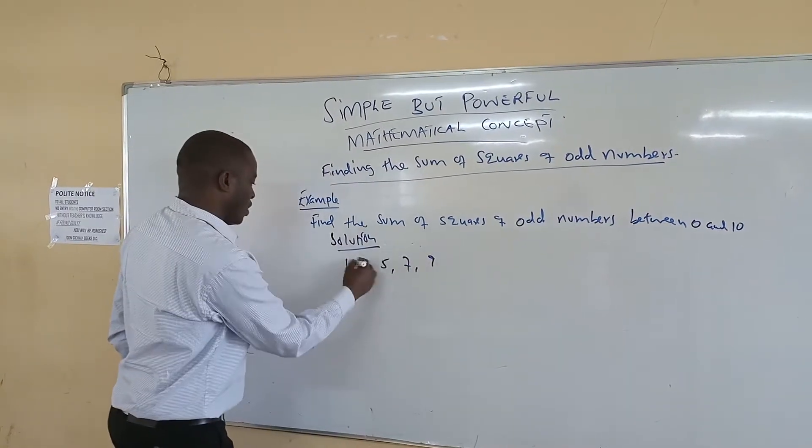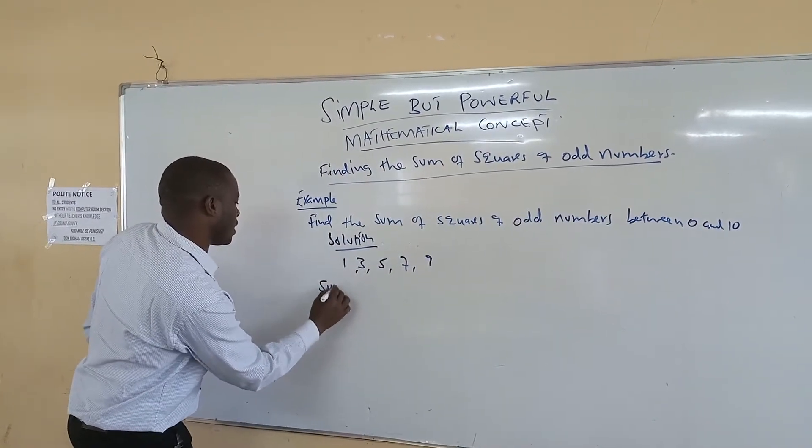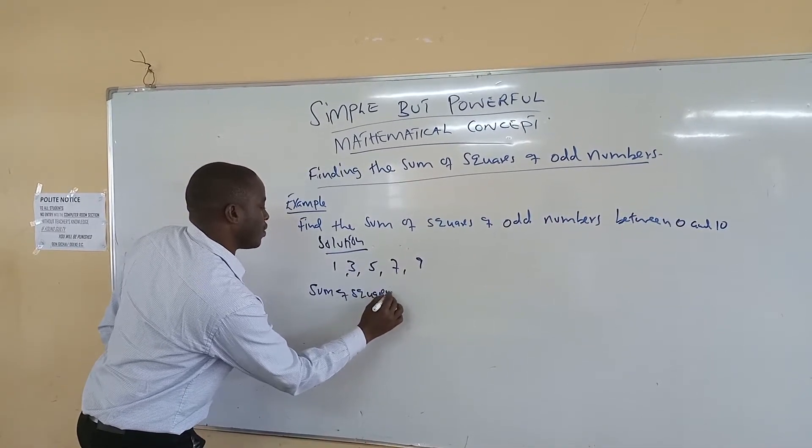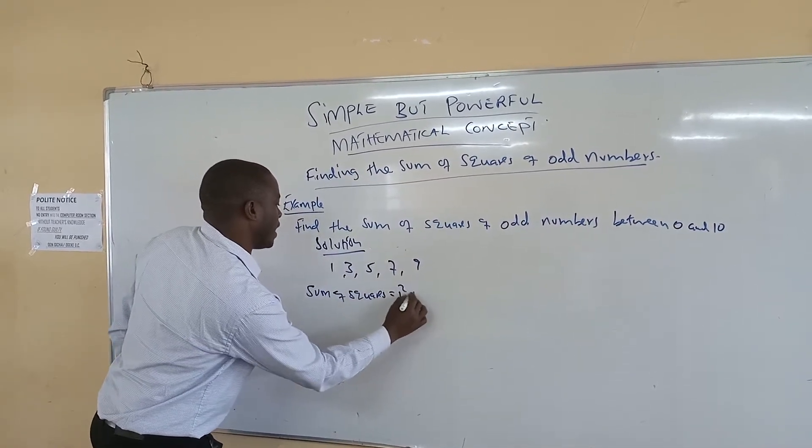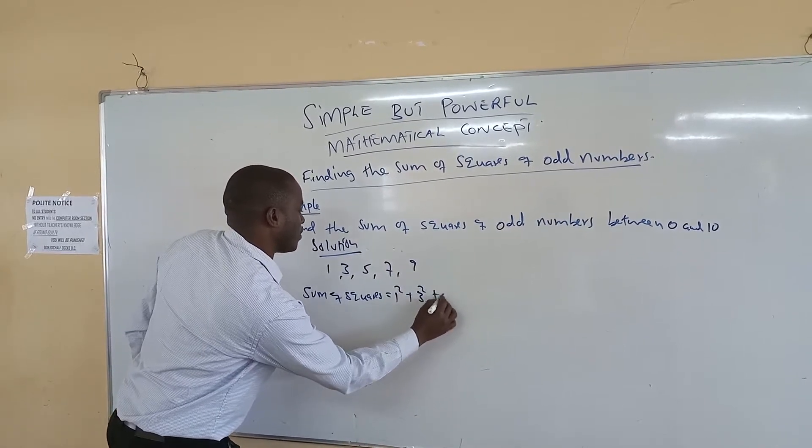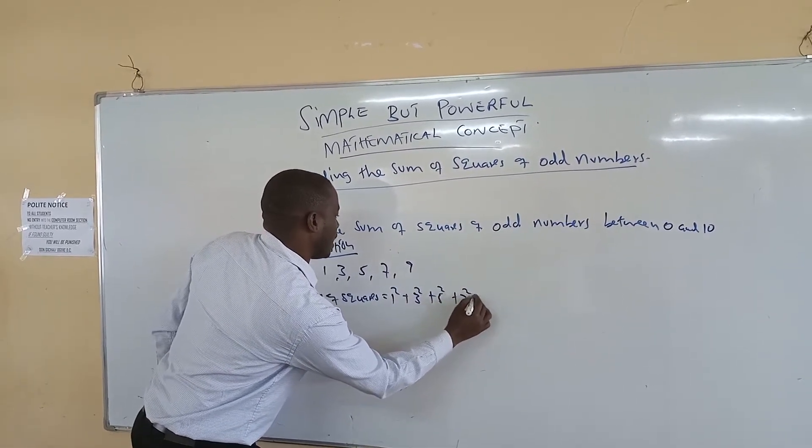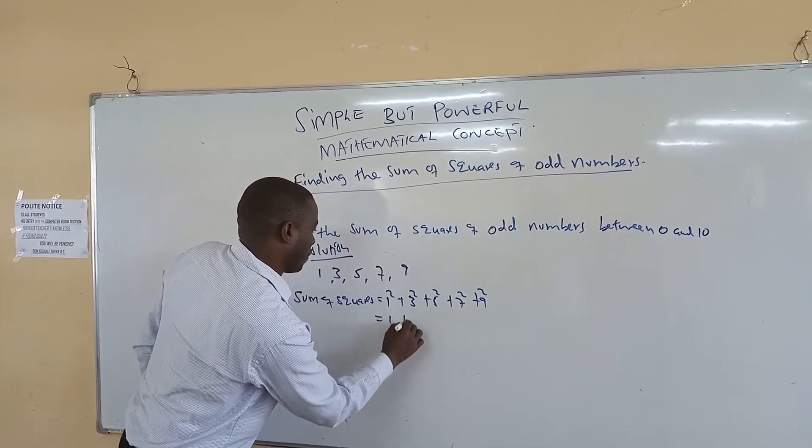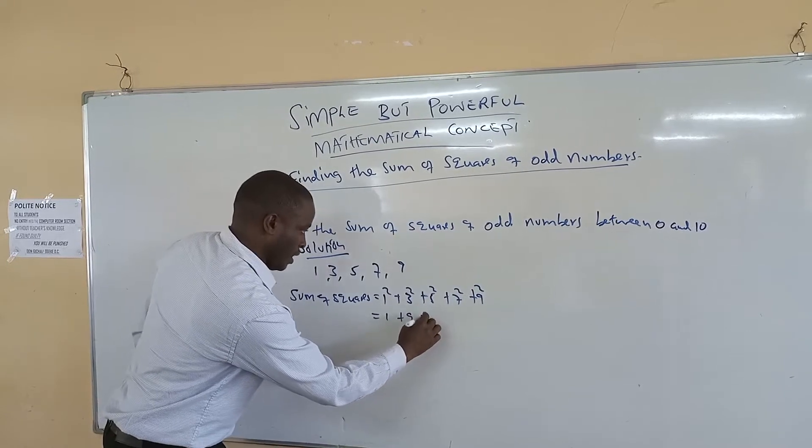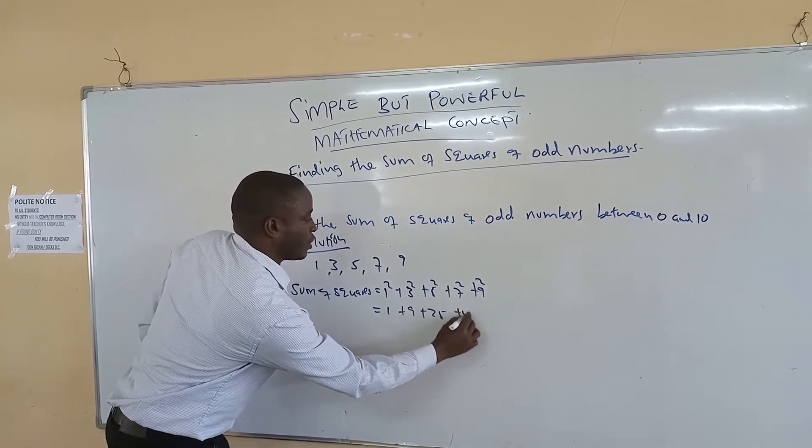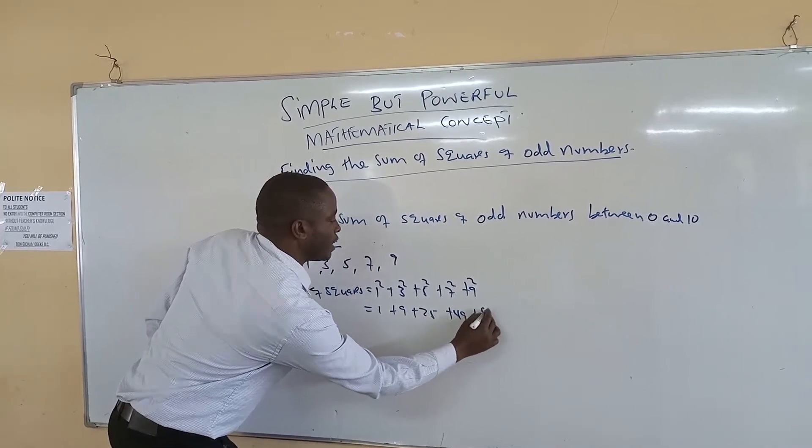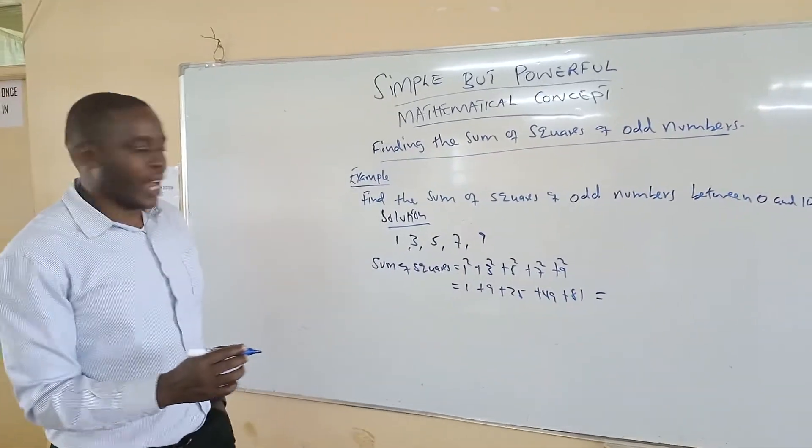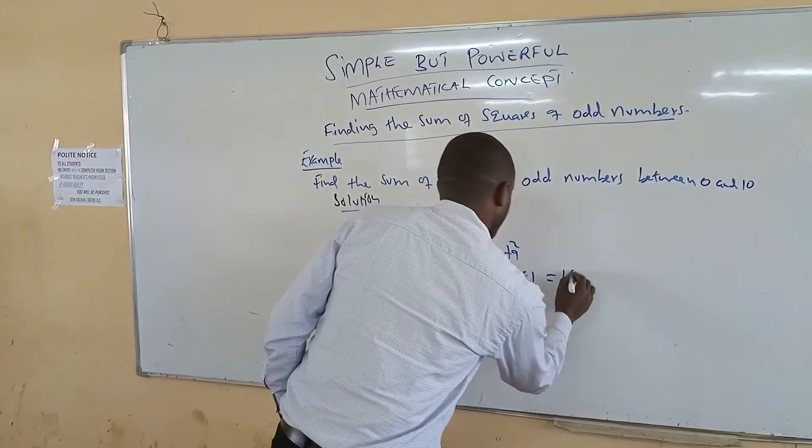The sum of the squares, if we were doing it, sum of squares will be equal to 1 squared plus 3 squared plus 5 squared plus 7 squared plus 9 squared, which is equal to 1 plus 9 plus 25 plus 49 plus 81, and this gives you the sum of 165.